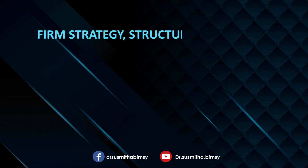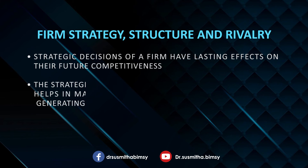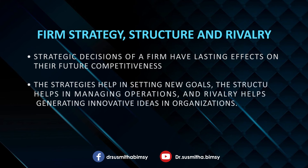The fourth factor is firm strategy, structure, and rivalry. The firm's own strategy helps in augmenting exports, as there is no fixed rule regarding the adoption of a particular strategy. Strategic decisions of the firm have lasting effects on their future competitiveness. The greater the rivalry, the greater will be the competitive strength of the industry. Domestic rivalry is instrumental to international competitiveness because it forces companies to develop unique and sustainable strengths and capabilities. For example, the Japanese automobile industry, with intense rivalry between players such as Honda, Toyota, and Suzuki, has enabled them to compete more easily in foreign markets.